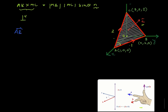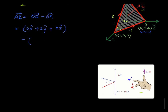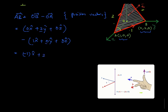So what is AB? AB equals OB minus OA, which is given by 0x plus 2y plus 0z, obtained from the figure, minus OA which is 1x plus 0y plus 0z. This definition comes from position vectors. So AB is therefore: 0 minus 1 is minus 1x, 2 minus 0 is 2y, and 0 minus 0 is 0z. So AB equals minus 1x plus 2y plus 0z.